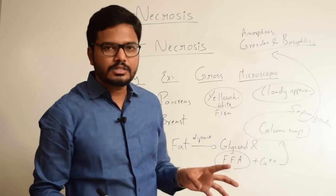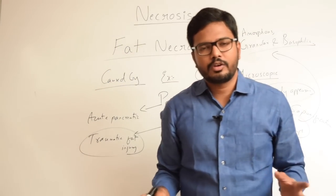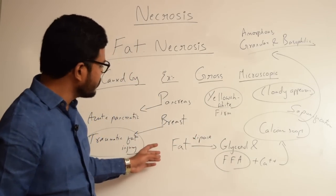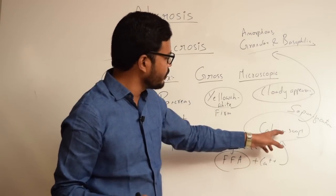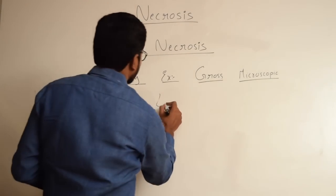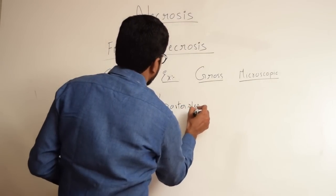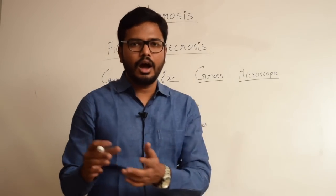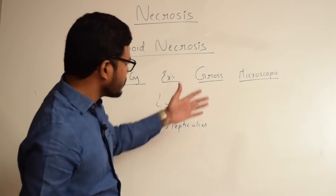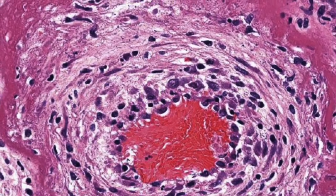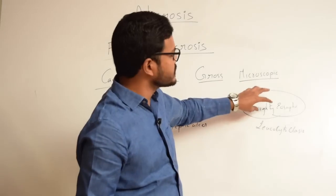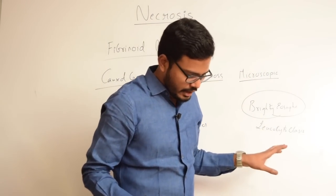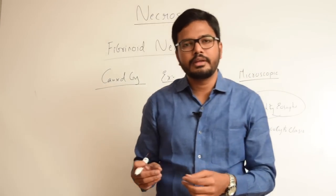To summarize fat necrosis: it is a special form of necrosis seen in two distinct locations — pancreas in case of acute pancreatic necrosis, and breast in traumatic fat injuries. The mechanism involves release of lipases due to injury or trauma, which convert neutral fat into glycerol and free fatty acids, which complex with calcium forming calcium soaps through saponification. Macroscopically it has a yellowish-white, firm appearance. Microscopically, fat cells appear cloudy and calcium soaps appear amorphous, granular, and basophilic.